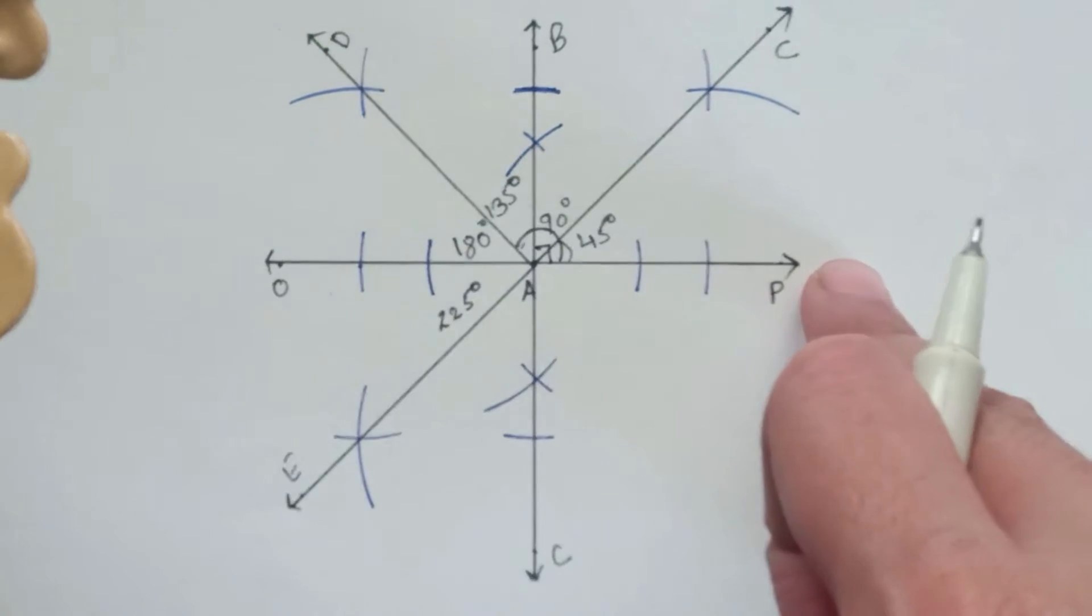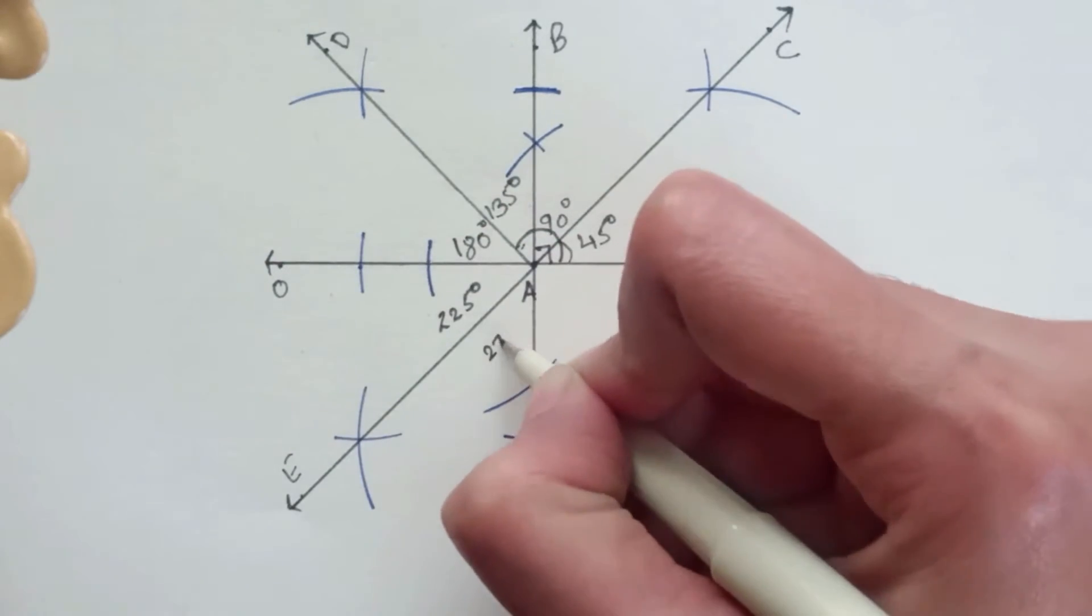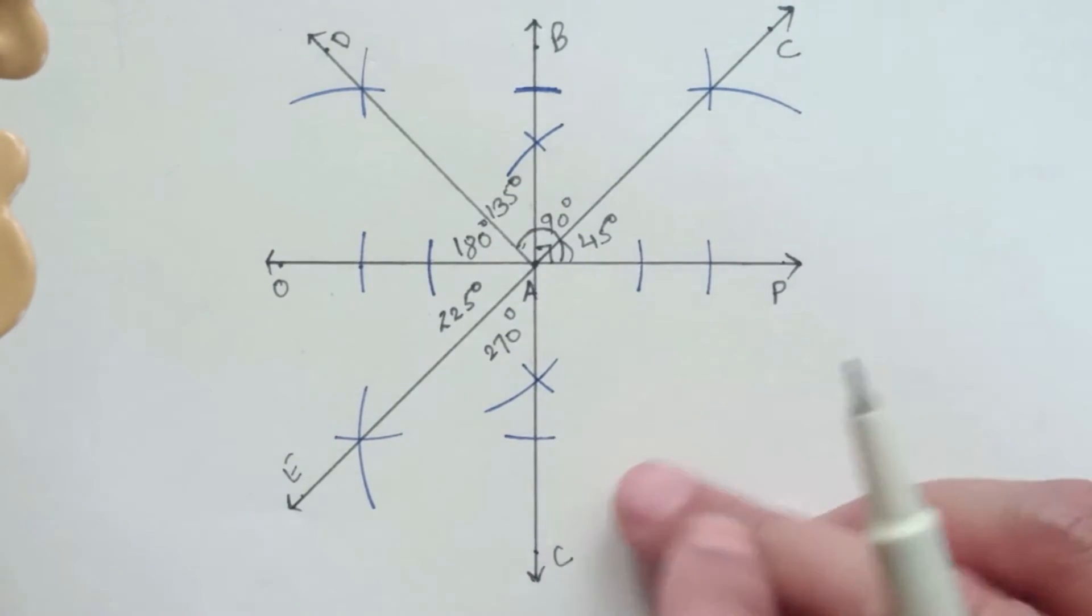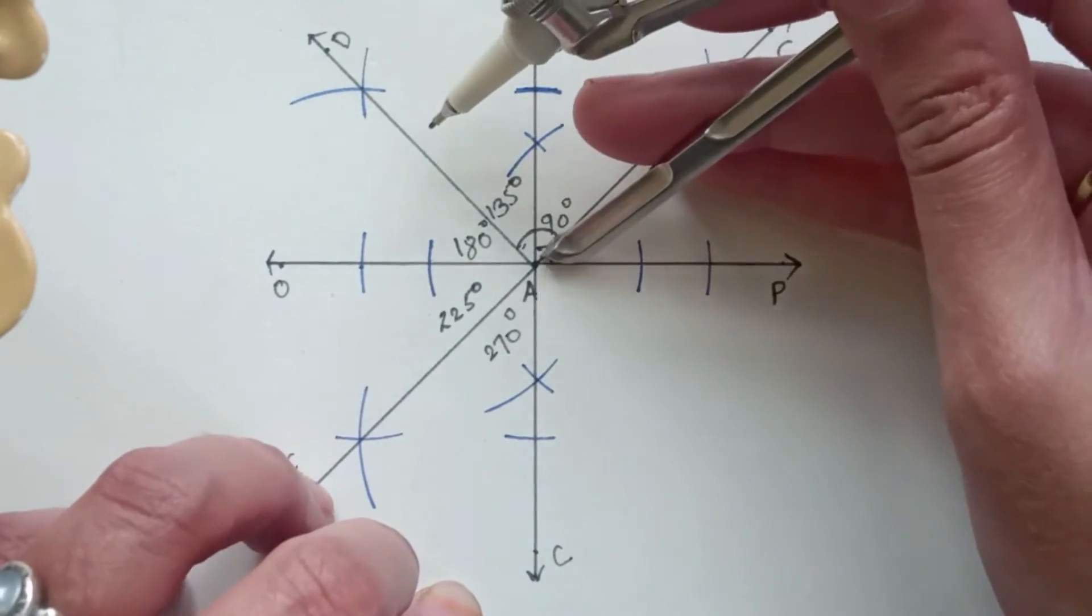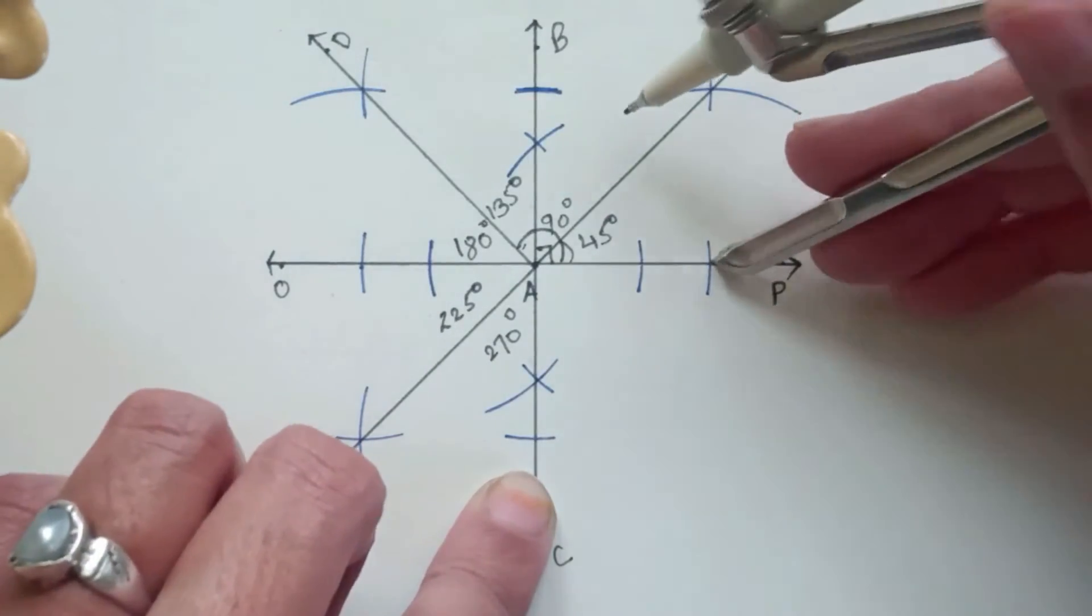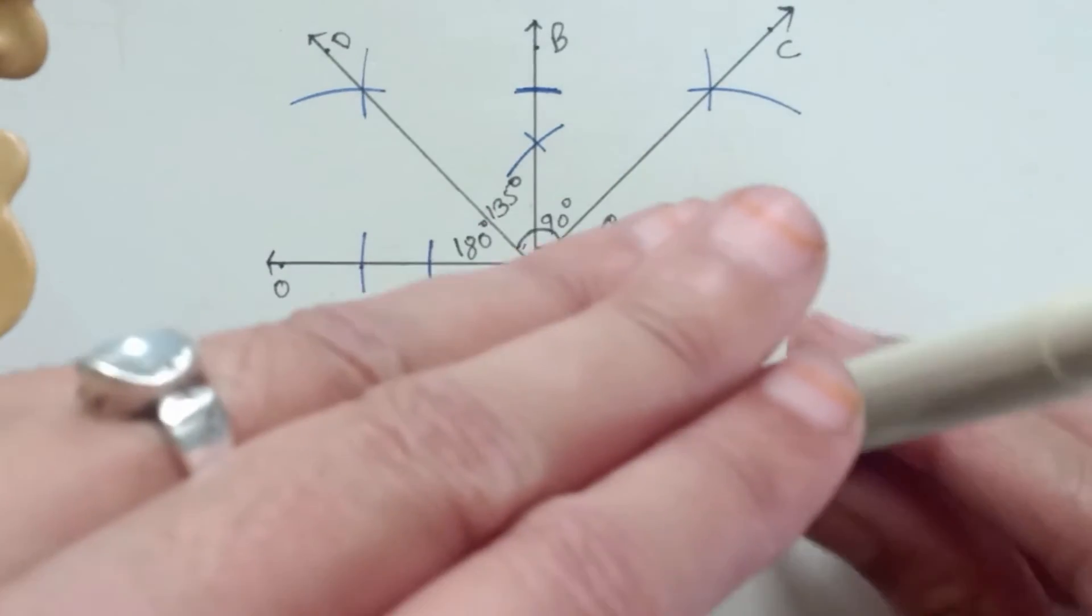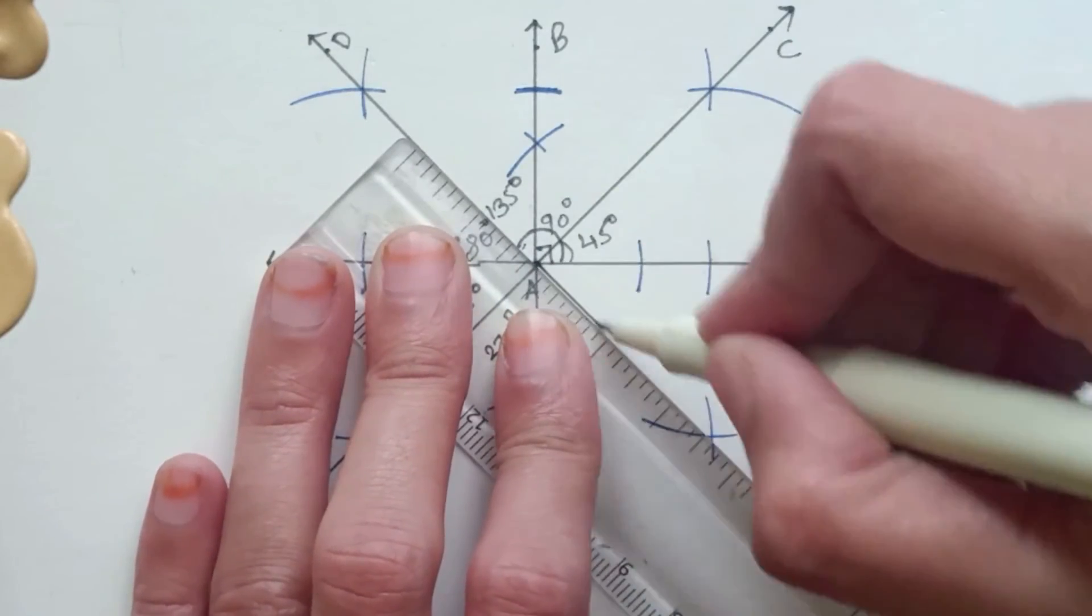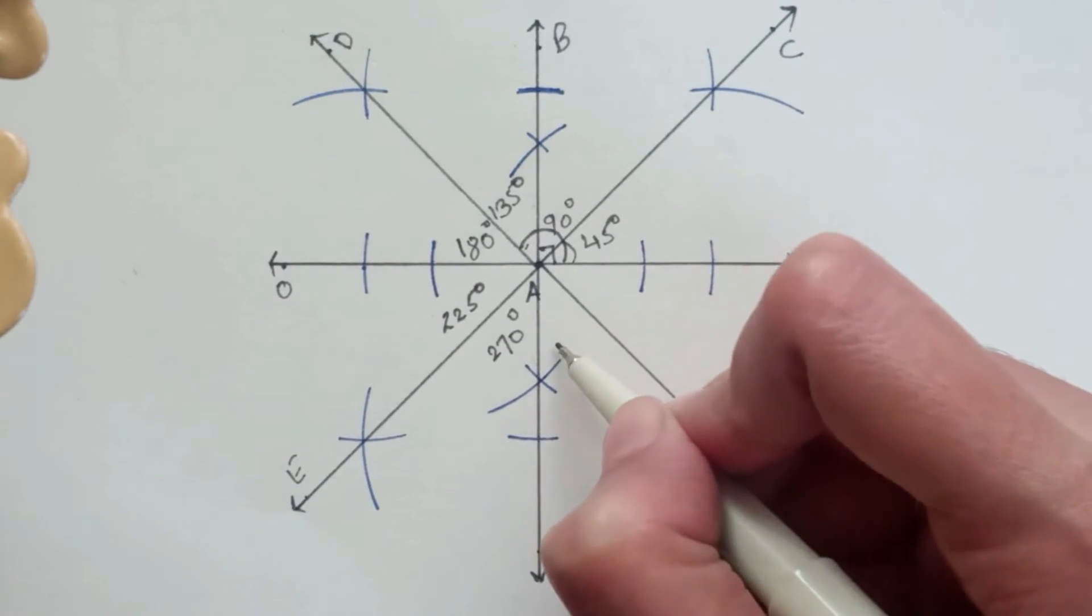Now the line AC will be at an angle of 270 degrees from point P. Then we have the next angle will become 315 degrees which will occur between AC and AP. Keep the pointer on A at the same distance. I'm just going to draw two intersecting arcs and join this point with point A. That will become point F and will be a 315 degrees angle.